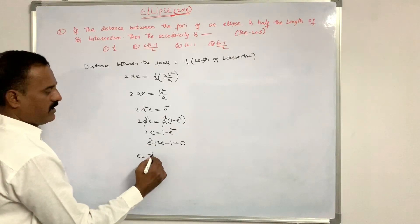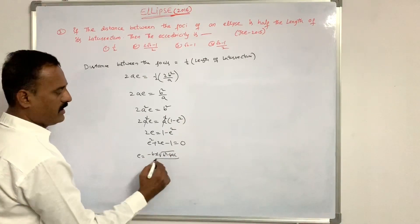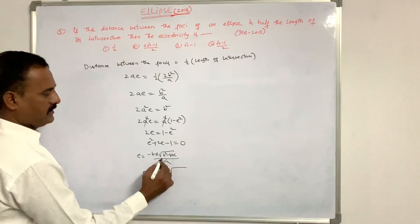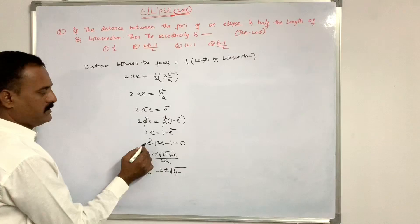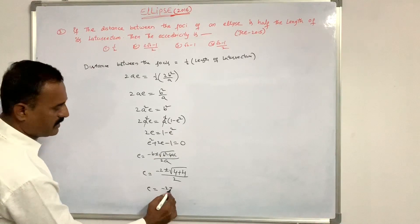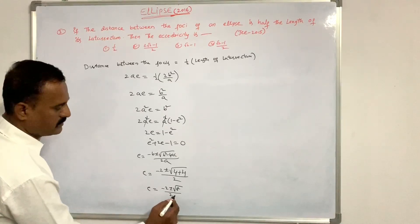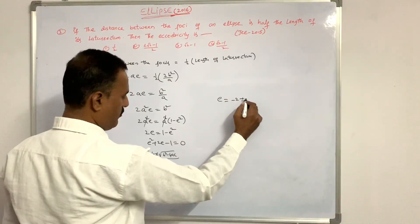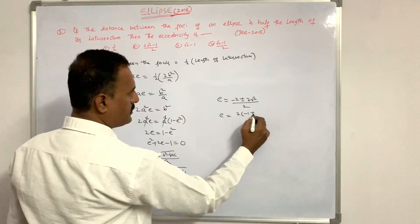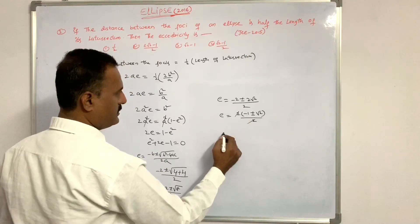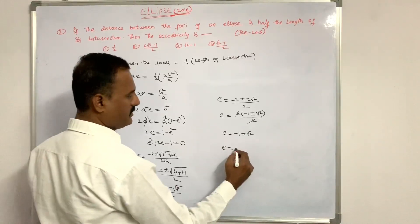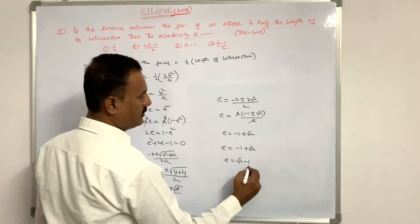Therefore applying the quadratic formula: e = (−b ± √(b² − 4ac)) / 2a. So e = (−2 ± √(4 + 4)) / 2 = (−2 ± √8) / 2 = (−2 ± 2√2) / 2. Taking 2 common: e = −1 ± √2. Taking the positive value: e = √2 − 1.